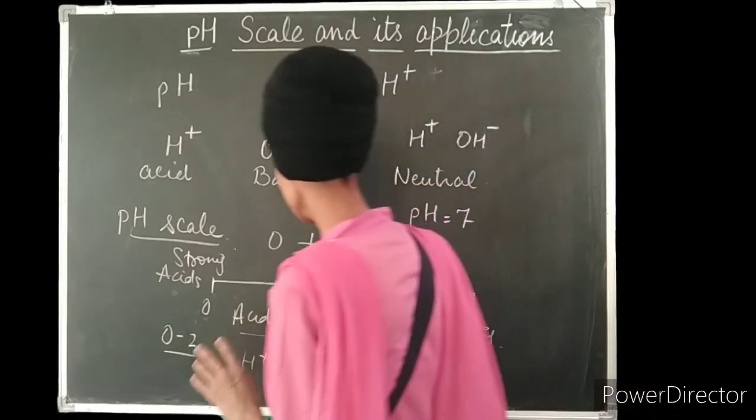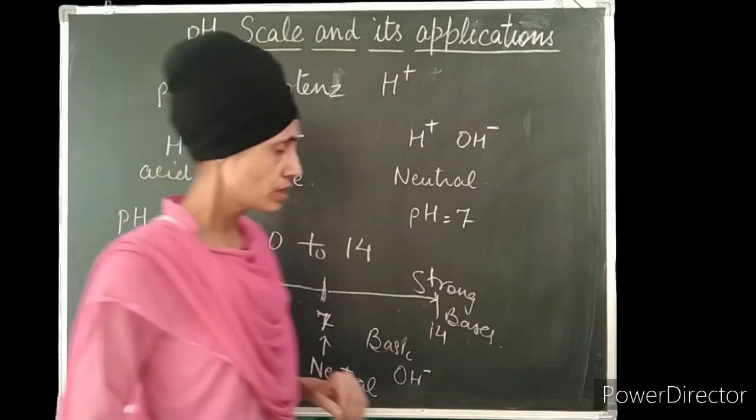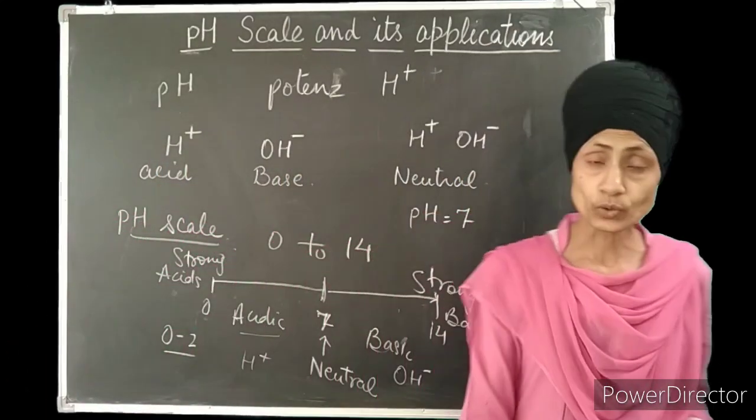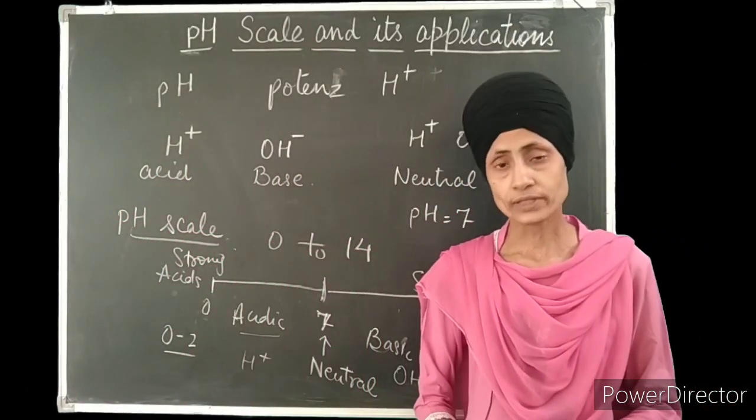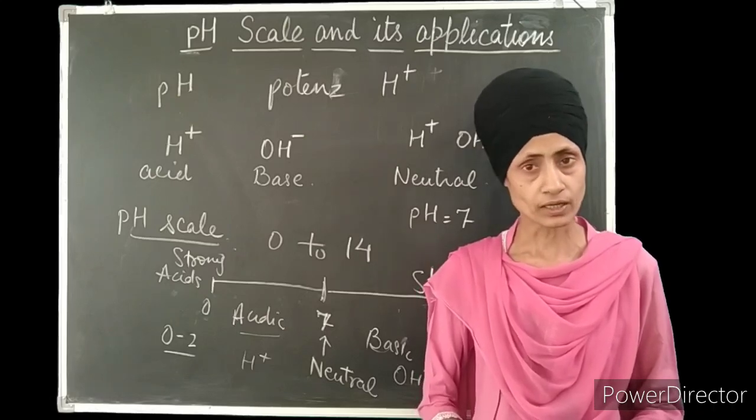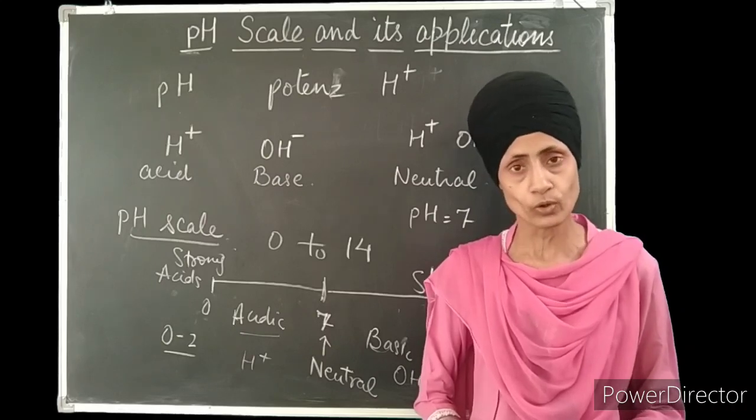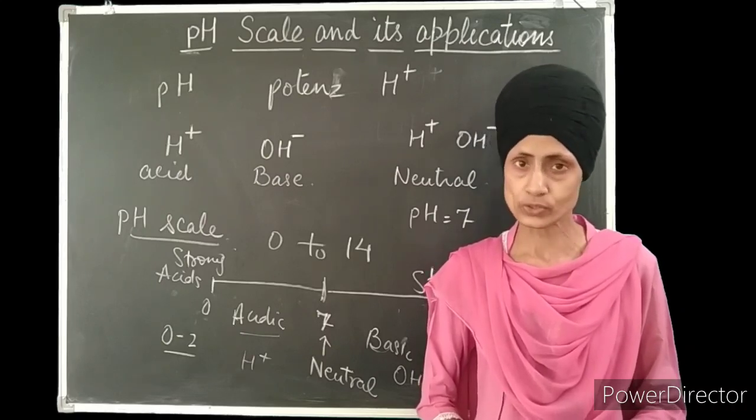So this is pH scale, pH range, pH values. Now I would like to tell you how to measure it. For that I am going to show you a pH scale which is having varying shades. And from the shades we can come to know what is the pH value of the solution.